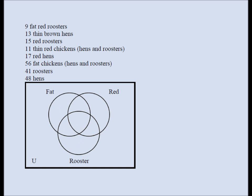Let's fill out the Venn diagram with numbers. Starting with nine fat red roosters — nine goes in the intersection of fat, red, and rooster. For 13 thin brown hens: thin means outside fat, brown means outside red, hen means outside rooster — so 13 goes outside all three circles.